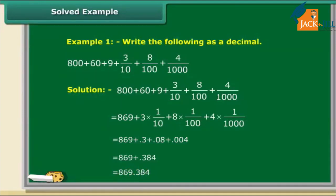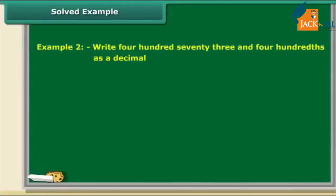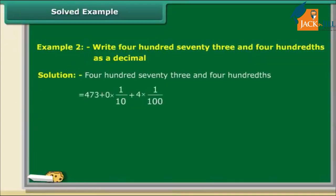Let us solve one more question. Write 473 and 4 hundredths as a decimal. In this number, 473 is the whole part. The decimal part is 4 hundredths, which can be written as 0.04. So, the number is 473.04.